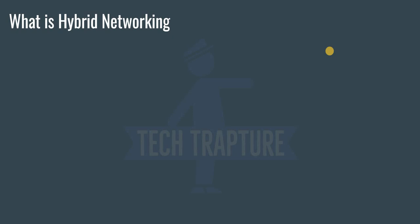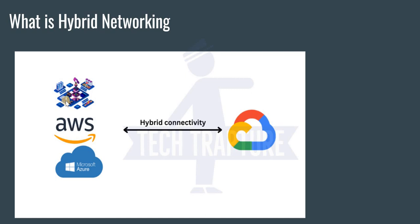But if you want to access your Google Cloud virtual machine from your on-premises virtual machine, or access an on-premises virtual machine from your Google Cloud virtual machine — how do you establish connectivity between your on-premises data center and your Google Cloud network? Or if you want to connect your Google Cloud network to AWS, Azure, or any other cloud provider — that connectivity is called hybrid connectivity.